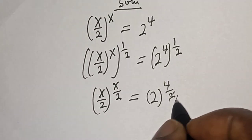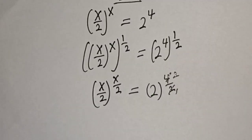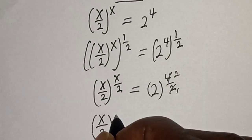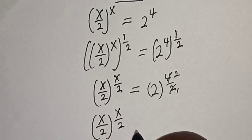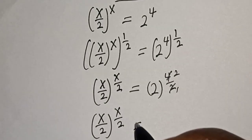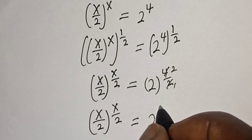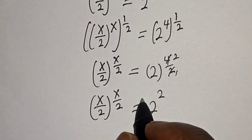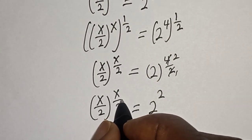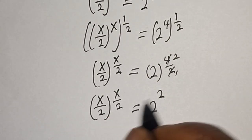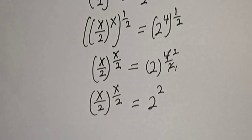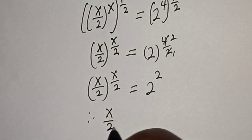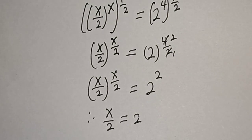Simplifying, s over 2 to the power of s over 2 is equal to 2 to the power of 2. If we compare this, the exponent s over 2 is equal to 2, and the whole expression equals 2. Therefore, s over 2 is equal to 2.